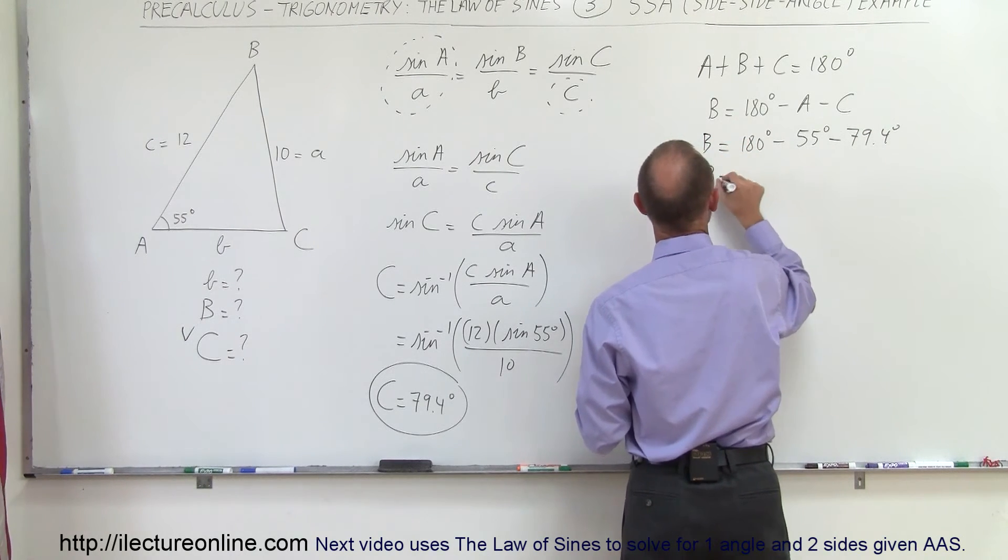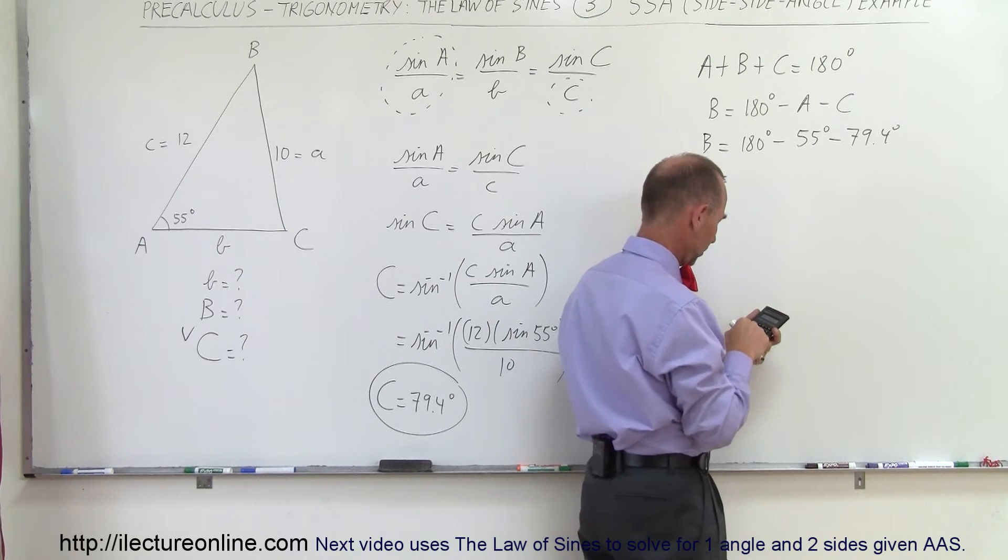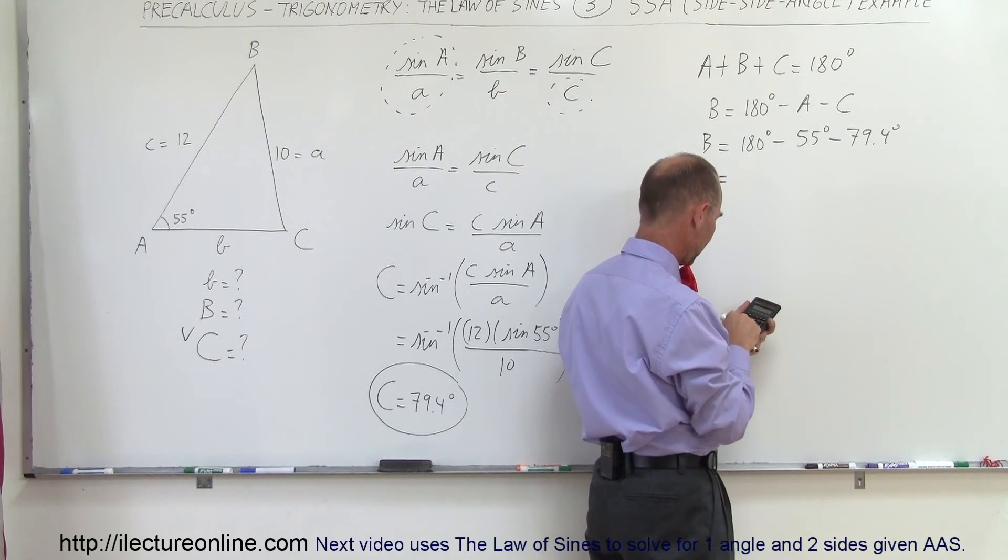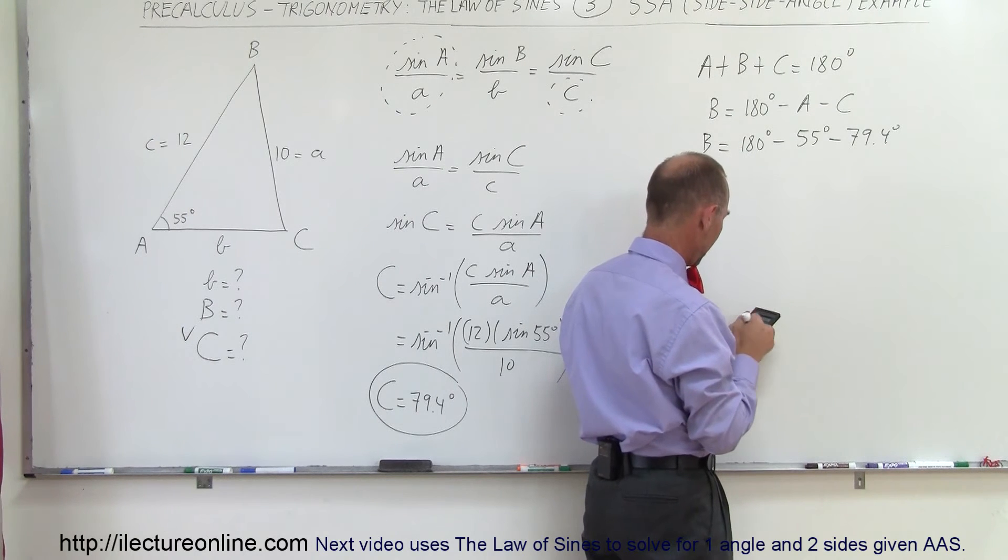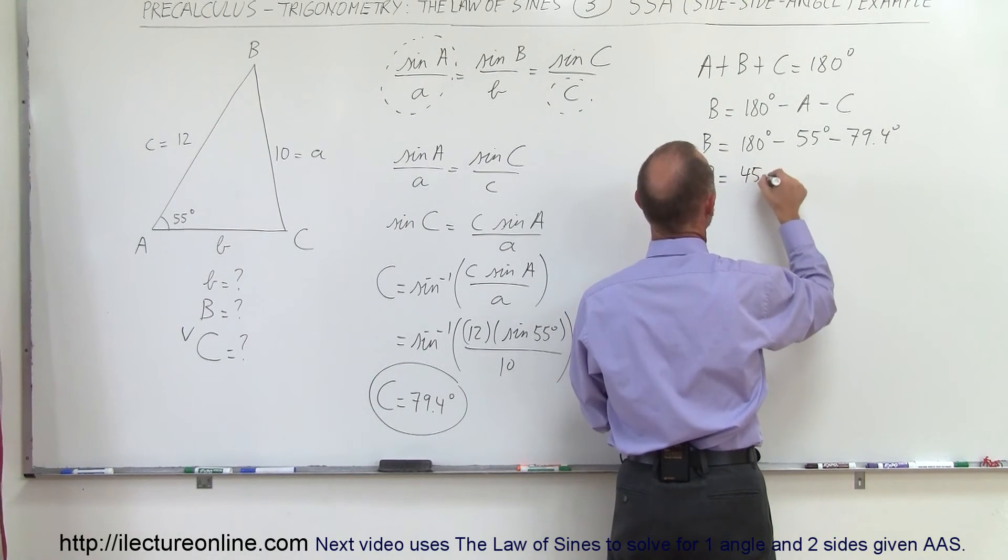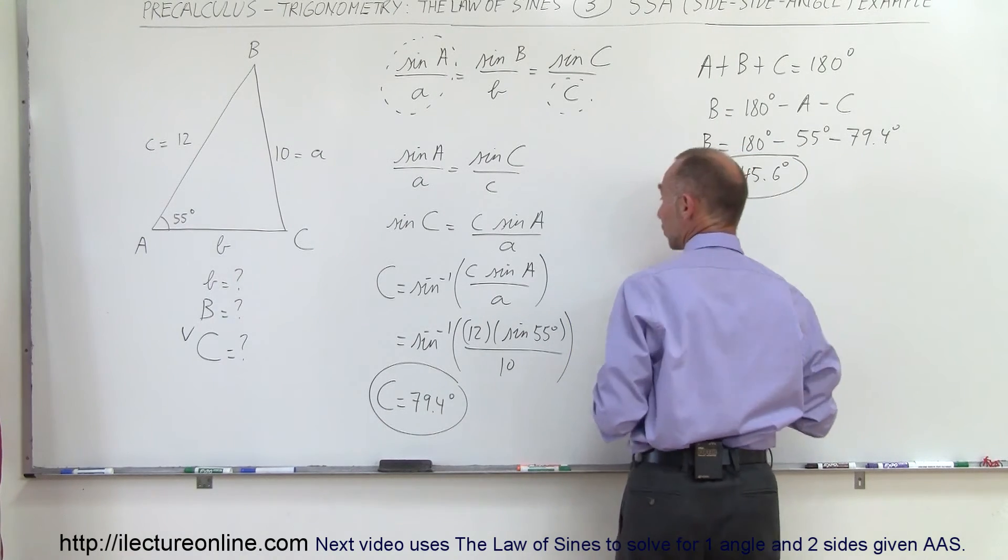So therefore angle B is, so subtract that minus, and minus 55 plus 180 equals, and we get 45.6 degrees. So 45.6 degrees, and now we know all three angles.